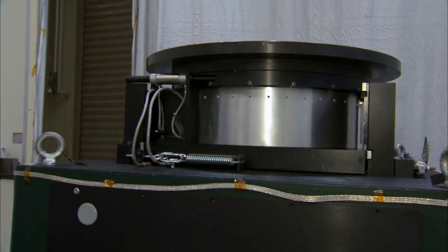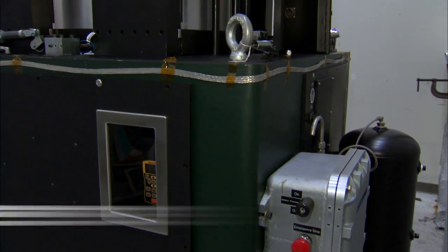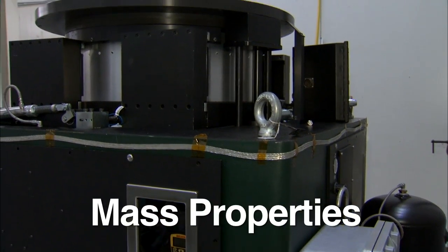We're standing here in front of the large spin table. This is the machine that we use to measure the mass properties of the Curiosity spacecraft.